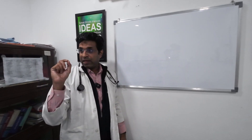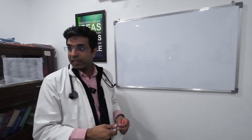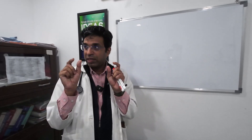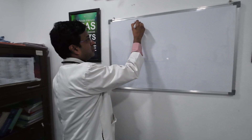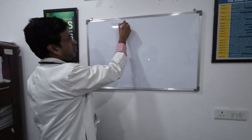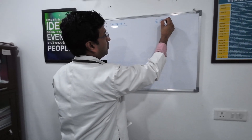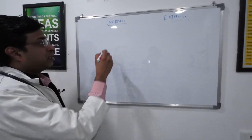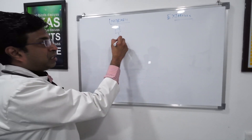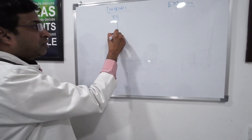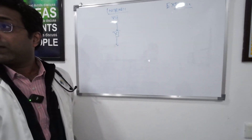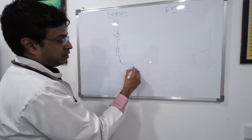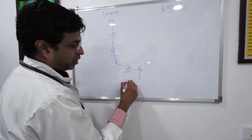Let's go back into the pathways of coagulation. I'll simplify as much as possible. We have two pathways: intrinsic and extrinsic. In the intrinsic pathway, the first factor activated is factor 12, which activates factor 11, which activates factor 9.